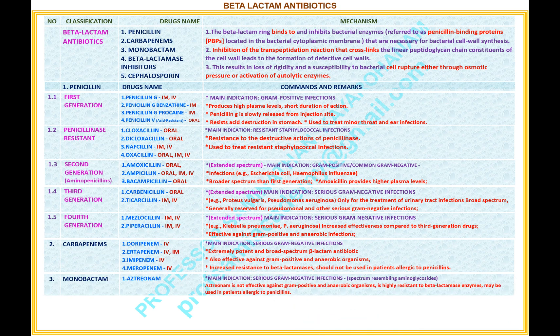Number 3 — Name of the classification: Monobactam. Drug under this classification: 1. Aztreonam. Comments and remarks — main indication: serious gram-negative infections. Spectrum resembling aminoglycosides. Aztreonam is not effective against gram-positive and anaerobic organisms. Is highly resistant to beta-lactamase enzymes and may be used in patients allergic to penicillins.